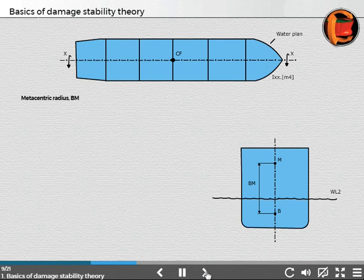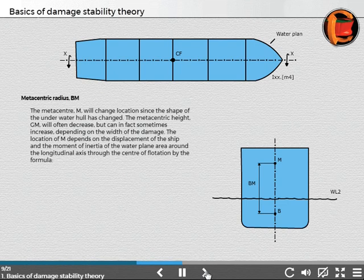Metacentric radius BM. The metacenter M will change location since the shape of the underwater hull has changed. The metacentric height GM will often decrease but can sometimes increase, depending on the width of the damage. The location of M depends on the displacement of the ship and the moment of inertia of the waterplane area around the longitudinal axis through the center of flotation, by the formula.